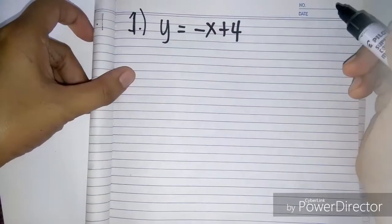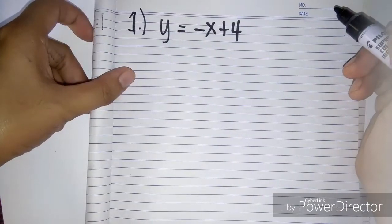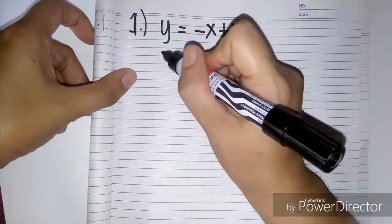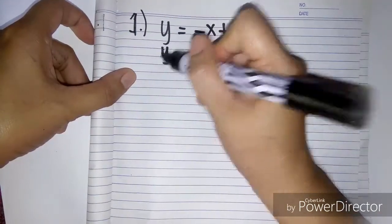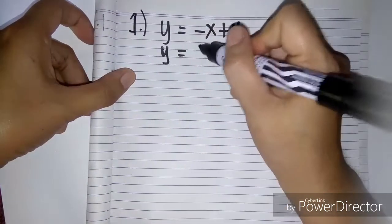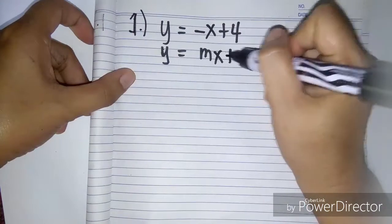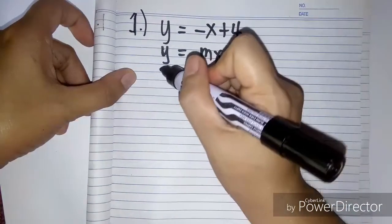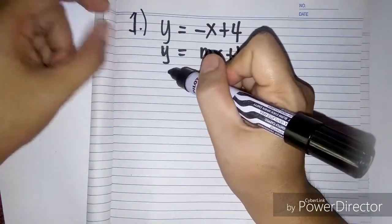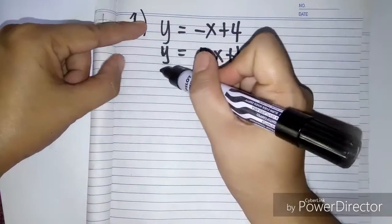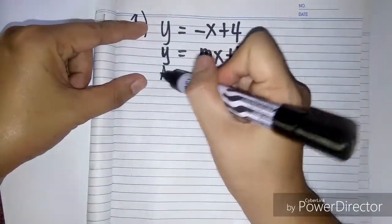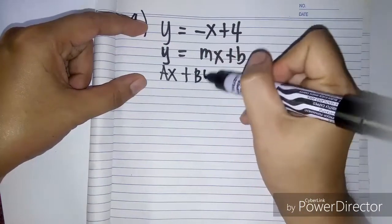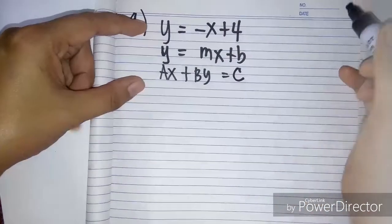Number one example is y equals negative x plus 4. It is in the form of slope-intercept form, y equals mx plus b. Our objective here is to rewrite the given equation into standard form, which is ax plus by equals c.